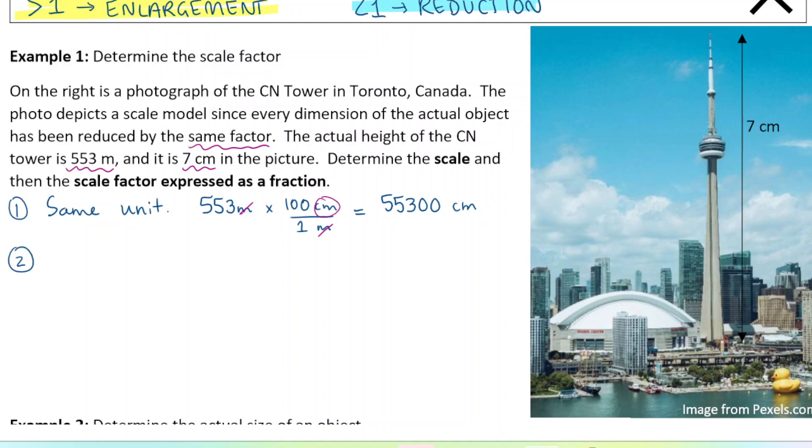Step two, we're going to determine the scale. So the scale is seven centimeters is the picture, and it's 55,300 is the actual CN tower. It's always in that order: picture to the actual size. We can reduce this by dividing both of those by seven, so we get one to 7,900 as our scale. And this is a reduction because we've drawn the picture smaller than the actual size, right?